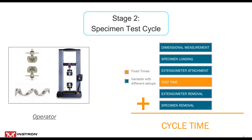Next is stage two, the specimen test cycle. This is where the operator performs the actual test from dimensional measurement, loading the specimen, extensometer attachment, the test itself, and then removing the specimen when the test is complete. In most cases, the actual time the specimen is under test is not affected by the test equipment being used, but the time taken by each of the other steps will vary depending on the testing frame and accessories.